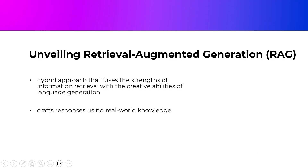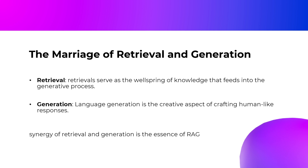Unveiling Retrieval Augmented Generation — RAG. Let's start our journey by demystifying what RAG is all about. In the grand landscape of natural language processing, RAG stands out as a hybrid approach that fuses the strengths of information retrieval with the creative abilities of language generation. It's like having an AI that not only comprehends and responds to your questions, but also crafts responses using real-world knowledge.